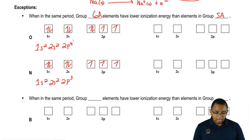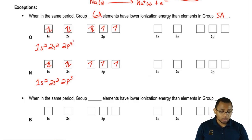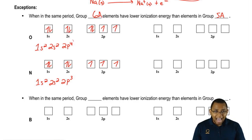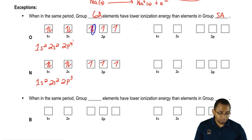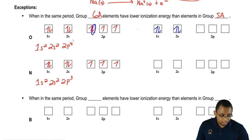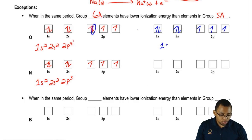Ionization energy is the energy it takes to remove an electron. We remove the last electron added when creating the electron configuration. For oxygen, the last electron added is the one pointing down. When we remove it, the configuration becomes 1s2, 2s2, 2p3.